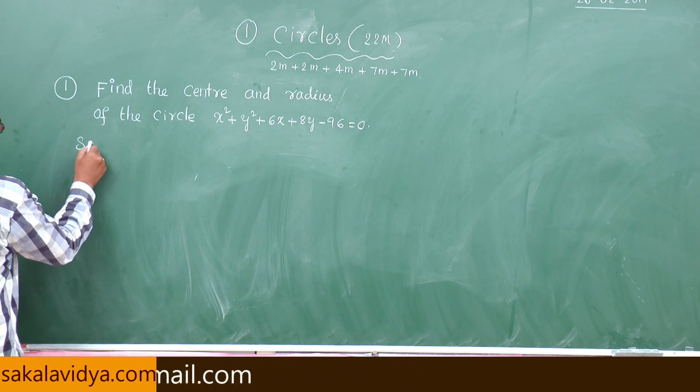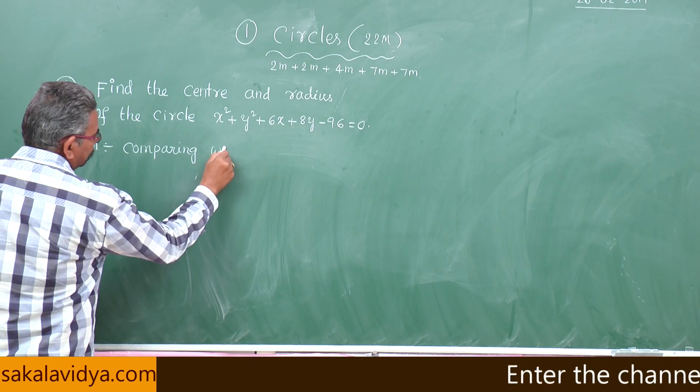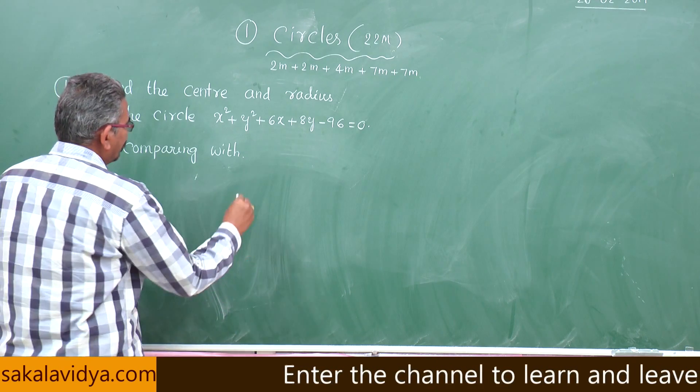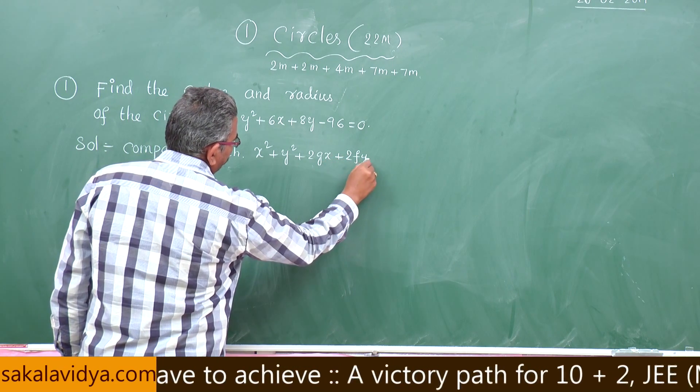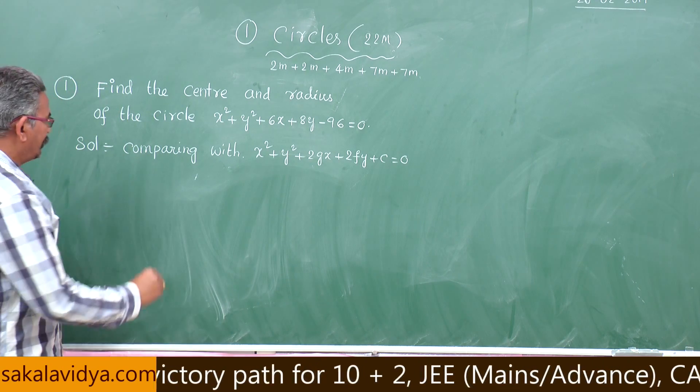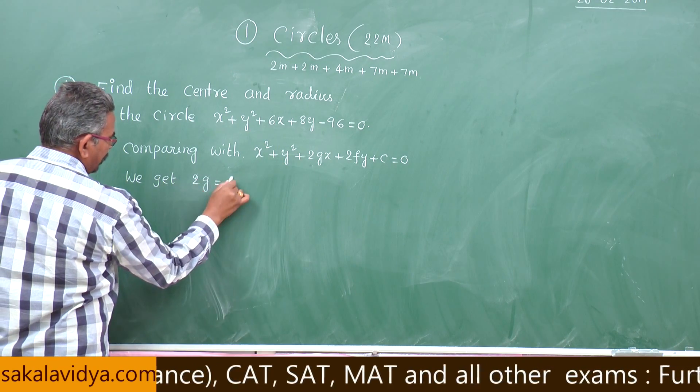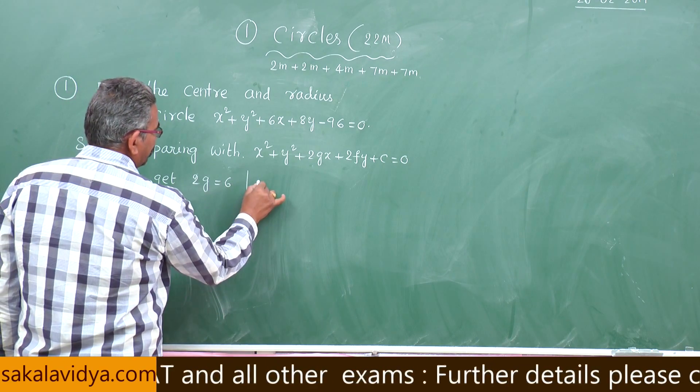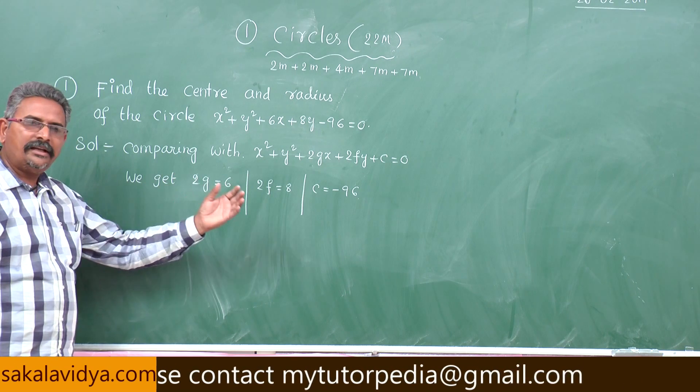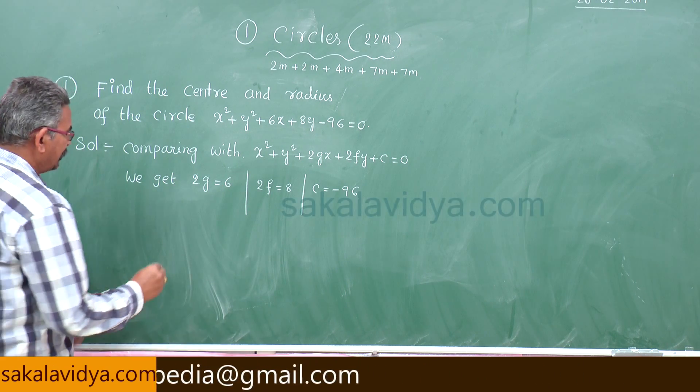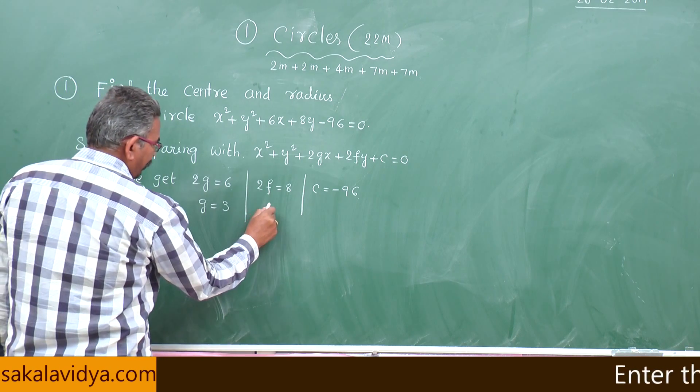Now comparing with x² + y² + 2gx + 2fy + c = 0, we get 2g = 6, 2f = 8, c = -96. As we know the 2g value, why cannot we find out g value? Yes, g = 6 divided by 2, we get 3. Similarly, we can find out f value, 8 by 2 is 4.